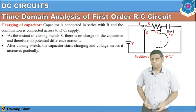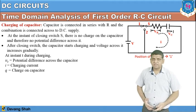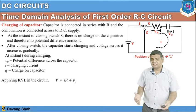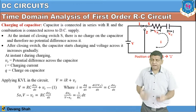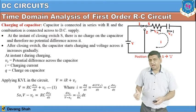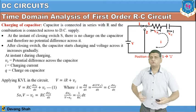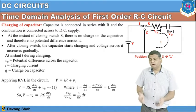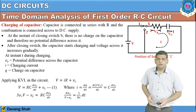Here V is the applied source, V_C is the voltage drop across the capacitor, V_R is the voltage drop across the resistance, I is the charging current, and Q is the charge on the capacitor. Applying Kirchhoff's Voltage Law in this loop: V = IR + V_C. Since I = dQ/dt and Q = C·V_C, we get I = C·(dV_C/dt). Substituting, the equation becomes V = RC·(dV_C/dt) + V_C.